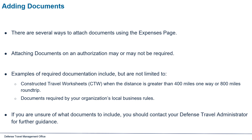There are several ways to attach documents to the Expenses page. Attaching documents on an authorization may or may not be required. Examples of required documentation include, but are not limited to, constructed travel worksheets when the distance is greater than 400 miles one way or 800 miles round trip, and documents required by your organization's local business rules. If you are unsure of what documents to include, contact your Defense Travel Administrator for further guidance.